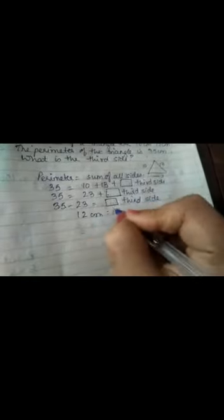So now when you subtract from here 35 minus 23 you will get your third side. So 35 minus 23, 12 centimeters is equal to the third side. So we add the two sides and we subtract from the total, we will get our third side that is 12 centimeters.